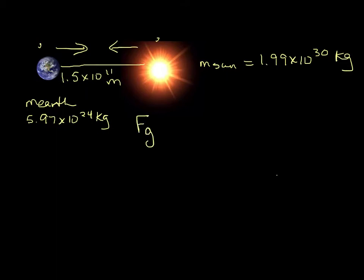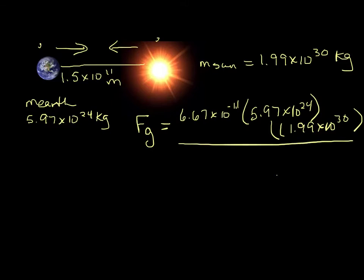So we calculate it the same way. Fg equals 6.67 times 10 to the minus 11. The mass of the Earth is 5.97 times 10 to the 24 kilograms. That is not a number you need to memorize. It would be given to you. The mass of the Sun is 1.99 times 10 to the 30th kilograms. Again, not a number you need to memorize. Distance between them is 1.5 times 10 to the 11 meters. We need to make sure that we square that. So when we crunch all those numbers we get 3.52 times 10 to the 22nd newtons. That's a lot larger force than we had before.